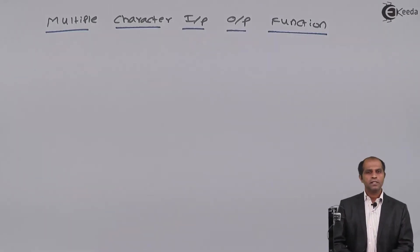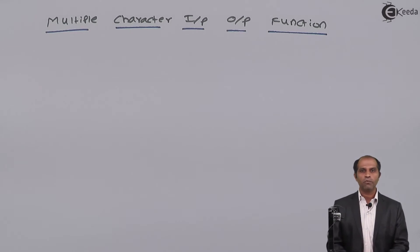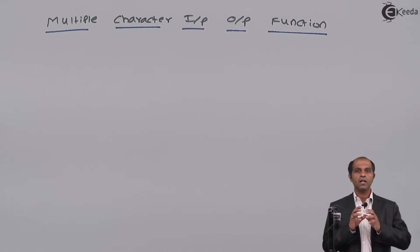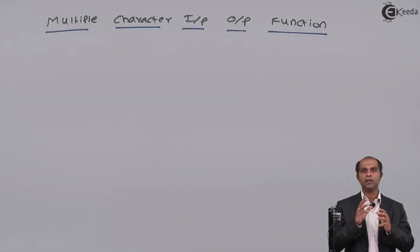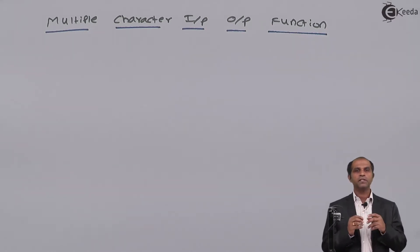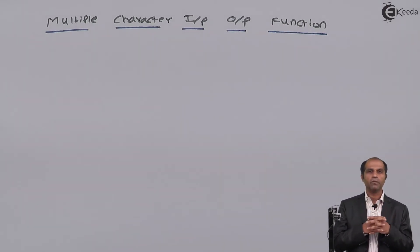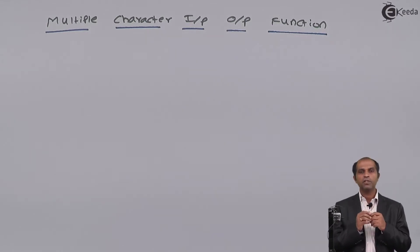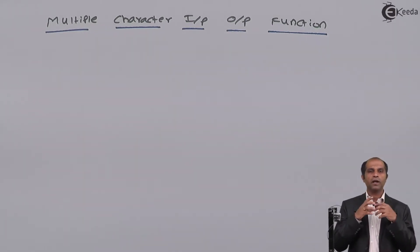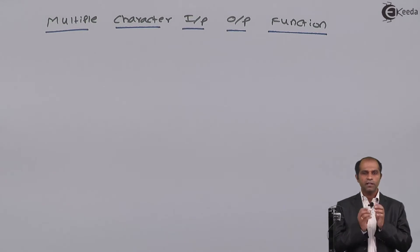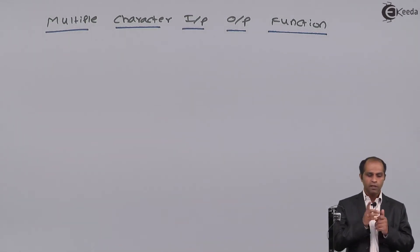Let's deal with the second type of input/output functions in C language. These functions are pertinent for multiple character input and output. When a question requires responding with a set of characters — for example, your name, address, or college name — all of these are sets of characters. When such inputs need to be read, we use these functions.